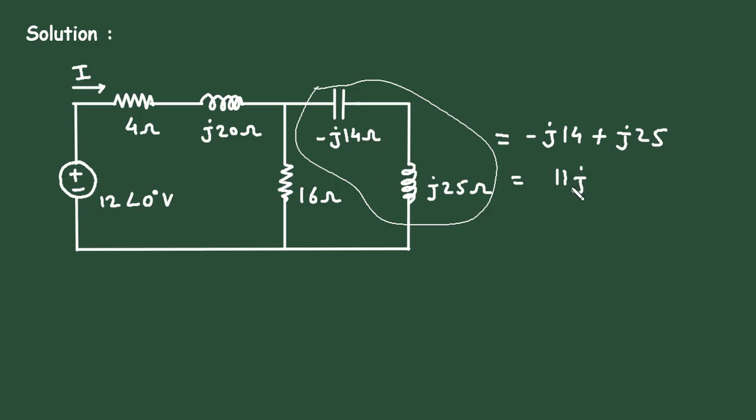Now this 11j is in parallel with this 16 ohm. So here we can write 11j parallel with 16 ohm. This is equal to 11j × 16 divided by 11j + 16.